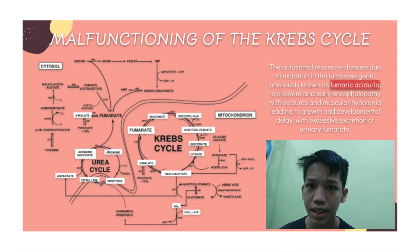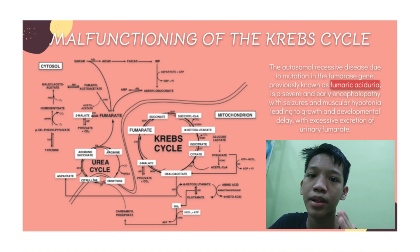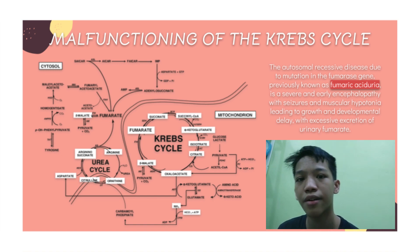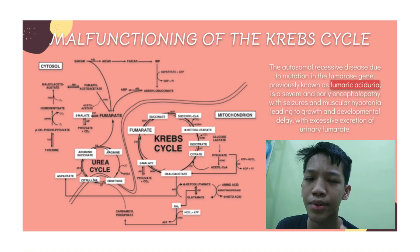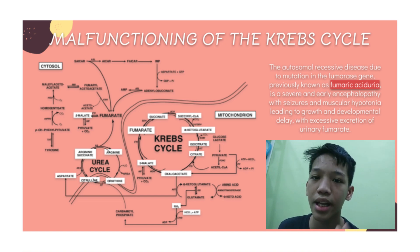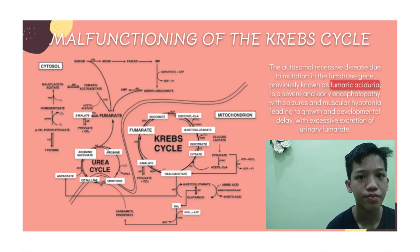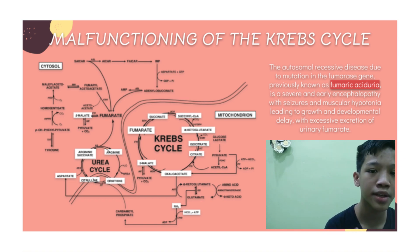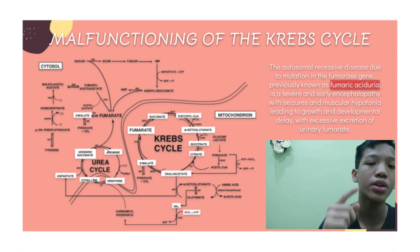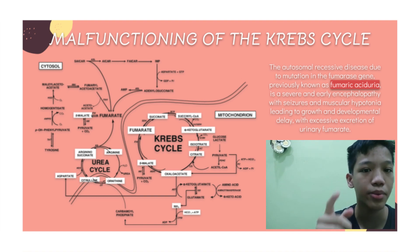Dysfunction in the Krebs cycle could cause major effects on living creatures, since energy production is crucial for life. A few cases of isolated, supposedly primary Krebs cycle disorders have been reported in humans. The autosomal recessive disease due to mutation in the fumarase gene — previously known as fumaric aciduria — is a severe early encephalopathy with seizures and muscular hypotonia, leading to growth and developmental delay with excessive excretion of urinary fumarate. Because of the similarity of clinical features associated with succinate dehydrogenase (SDH) and FH gene mutations, it was later suggested that decreased SDH activity due to accumulation of fumarate was the link between the two genetic diseases.